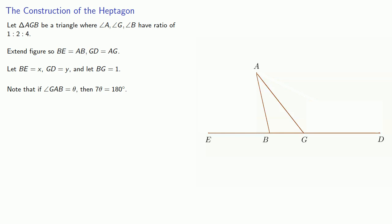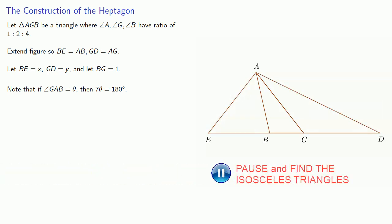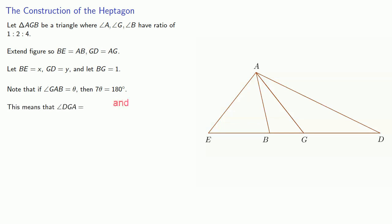Now, let's join AE and AD to make a couple more triangles. And because we have a bunch of isosceles triangles, we can actually find all of these angles. And the important ones are angle DGA, which is 5 theta. And so angles GDA and GAD are both theta.